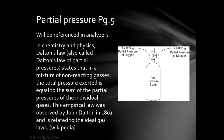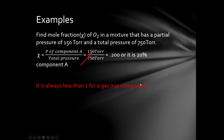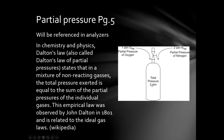Delving into partial pressure again: in chemistry and physics, Dalton's law of partial pressures states that in a mixture of non-reacting gases, the total pressure exerted equals the sum of the partial pressures of the individual gases. This was observed by Dalton in 1801 and relates to the ideal gas law PV = NRT. So if we have one atmosphere of oxygen and two atmospheres of nitrogen, the total is three atmospheres, and chi for oxygen is 1/3 and nitrogen is 2/3.